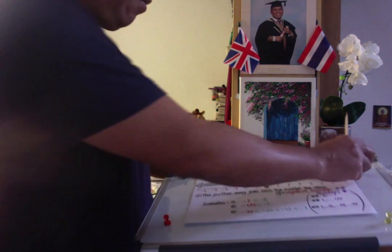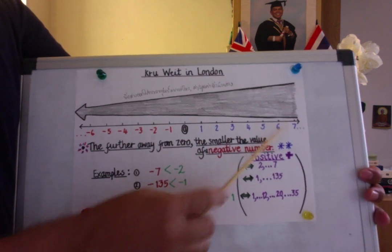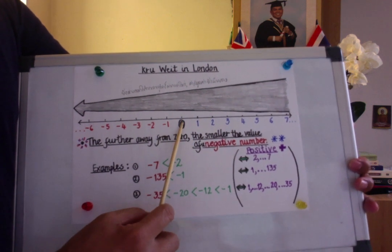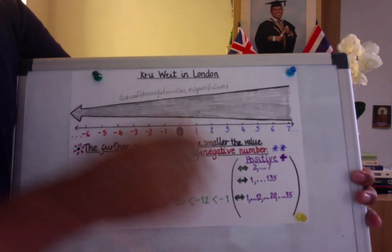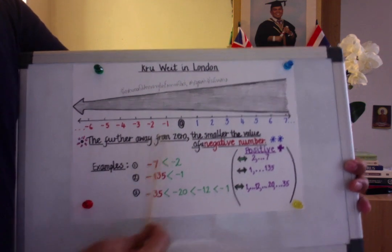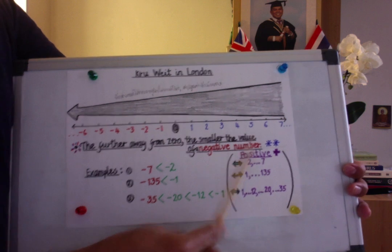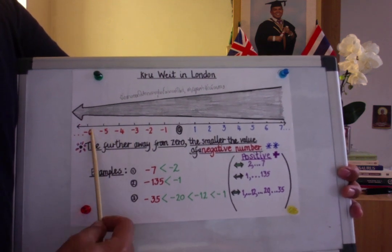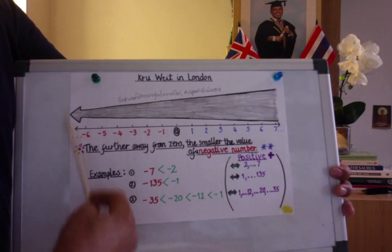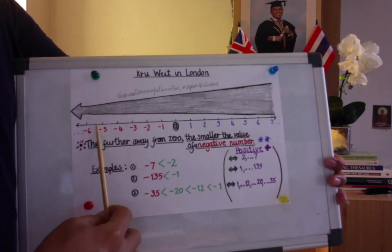I talked to you before that when we talk about positive numbers, the further the number goes to the right, the bigger the value. Going from zero to 1, 2, 3, 4, 5 — the further you go, the value increases. On the contrary, when we talk about negative numbers, the further away from zero to the left, the smaller the value. You can see that in the diagram I drew: going right makes numbers bigger, going left on the number line makes the value smaller.